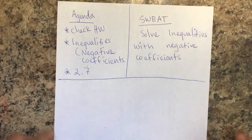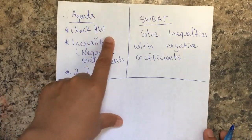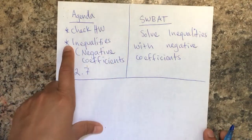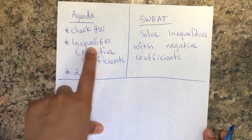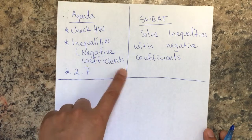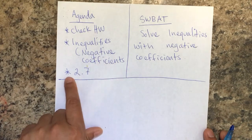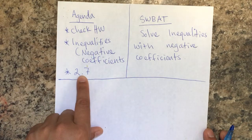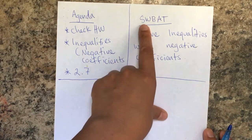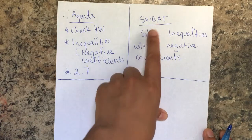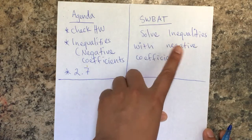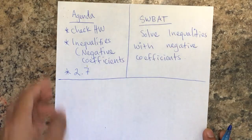Hello students. Today's agenda is to check homework. We'll be learning about inequalities with negative coefficients. Students will be able to solve inequalities with negative coefficients on section 2.7.